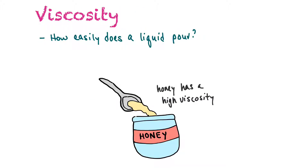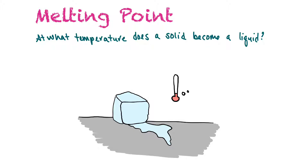Viscosity asks how easily a liquid pours. Honey has a high viscosity and pours very slowly; molasses is another example. Water has a lower viscosity and can easily be poured. Melting point asks at what temperature a solid becomes a liquid. For water, the melting point is zero degrees Celsius — it's also the freezing point, the temperature where liquid water becomes solid or solid water becomes liquid.